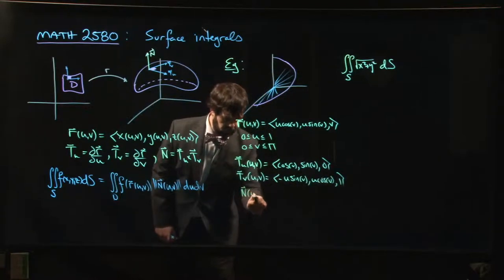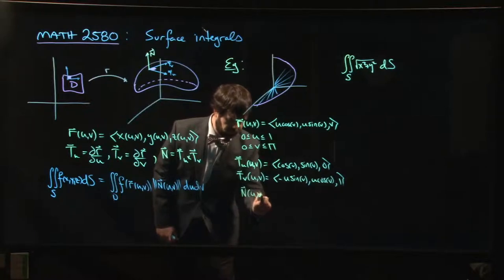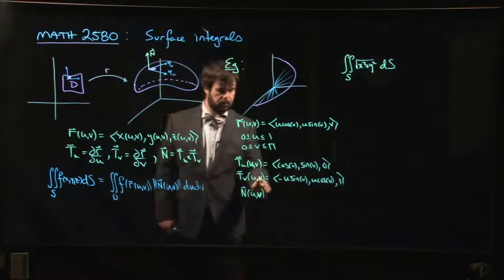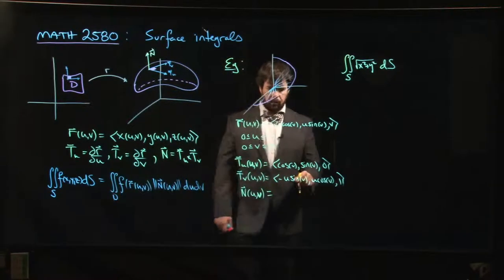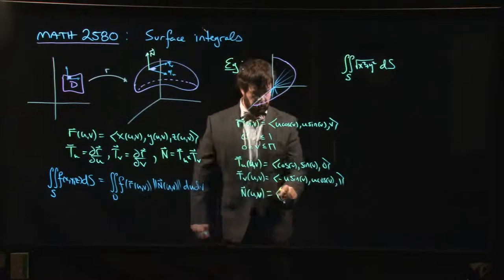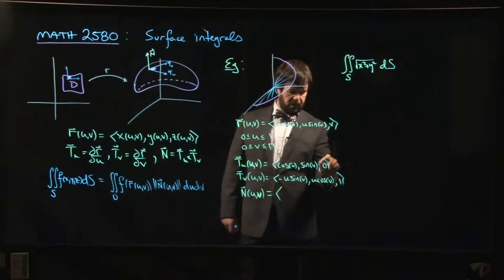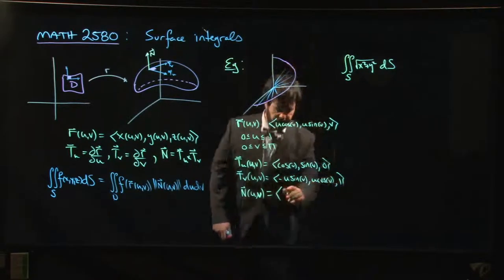So that means the normal vector n of u, v is the cross product of these two. So in the x component, we do this 2 by 2, we get simply sin v.